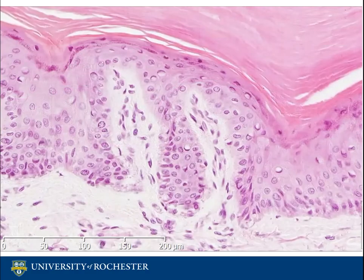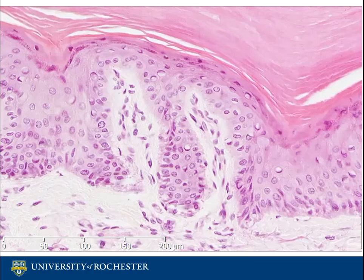The epidermis of the skin, or the integument, is the epithelium. There are several specific layers of the epidermis to be concerned with. The deepest layer is the stratum basale, or the basal germative layer, and going upwards you have the stratum spinosum, or prickle cell layer, the stratum granulosum, or granular cell layer, the stratum lucidum, and the stratum corneum, which is the keratin layer.